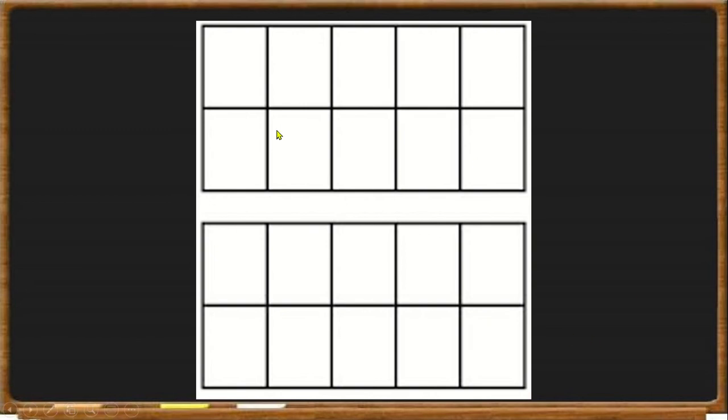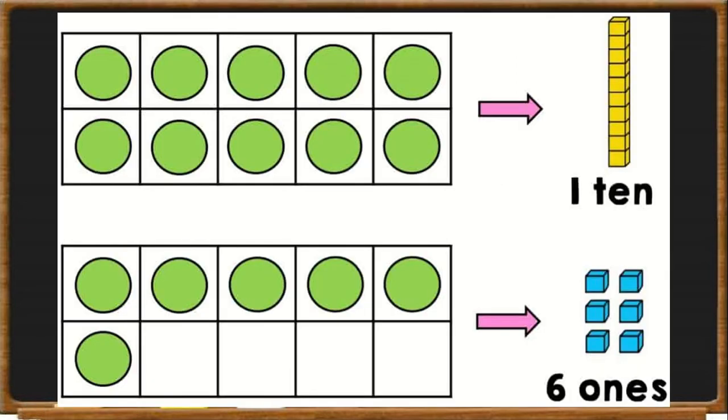So this is something we call a 10 frame. So here we have two 10 frames. We will always be working with two 10 frames, and I will show you now why. So when we have a 10 frame, we have 10 blocks in a 10 frame, and when we fill up the 10 blocks, we have one 10. If we don't have enough space on our 10 blocks, like for instance this was the number 16, we use the 6 units or 1s to fill in the next 10 block.